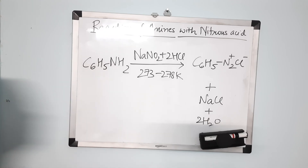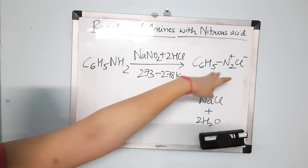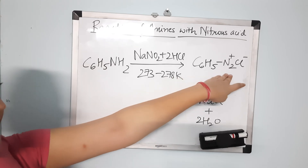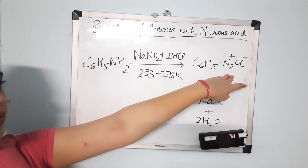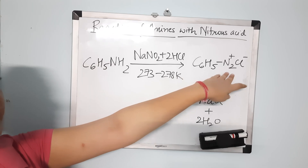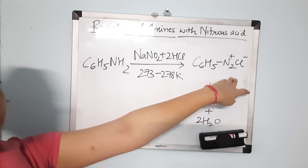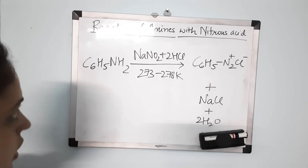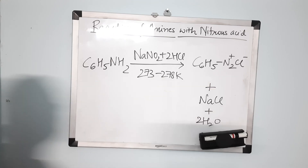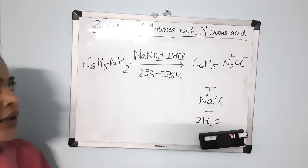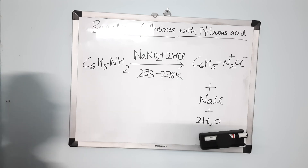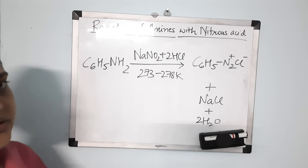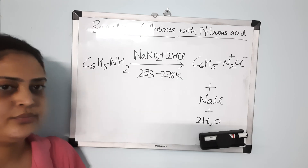Benzene diazonium chloride is used for making many organic compounds, so it is an important compound. This is all for today — I hope you have understood today's topic. Thank you.